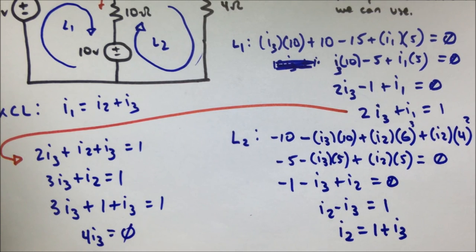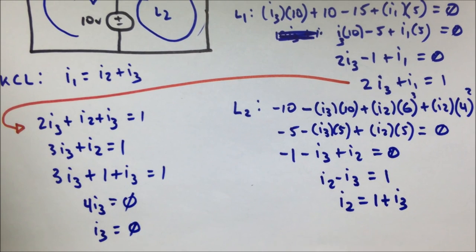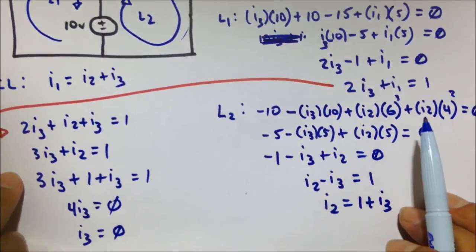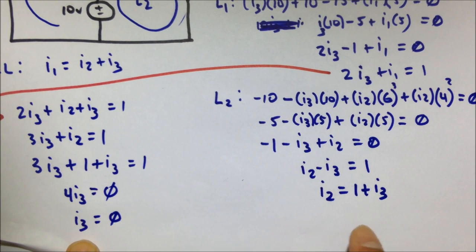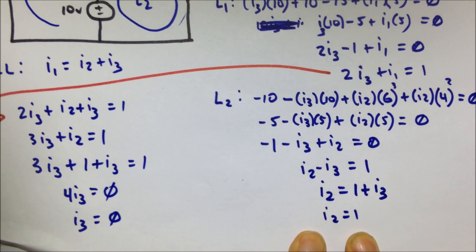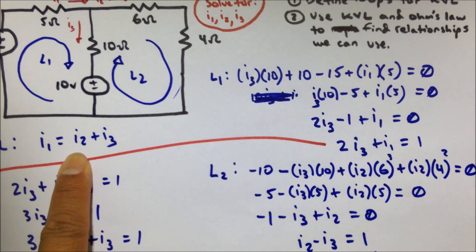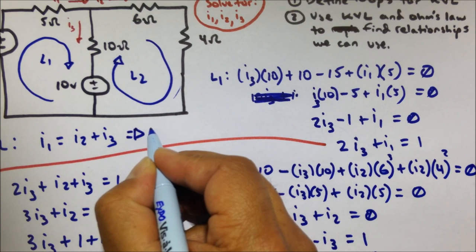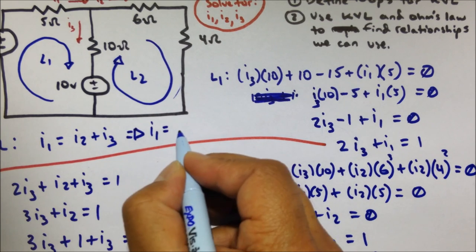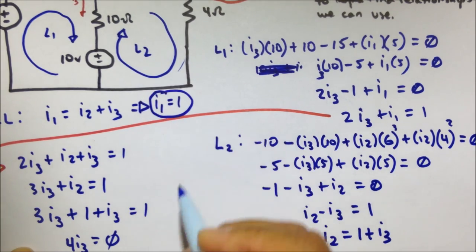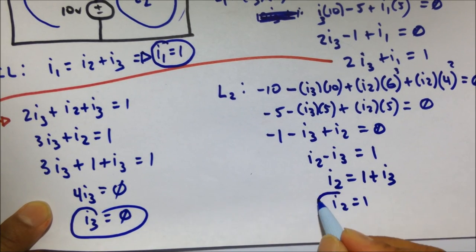That means I3 equals 0 — there's no current flowing through I3, so nothing is flowing down through that resistor. Since I3 equals 0, substituting back gives I2 equals 1. And since I1 equals I2 plus I3, I1 equals 1 plus 0, so I1 equals 1. So our final answers are I1 equals 1, I2 equals 1, and I3 equals 0.